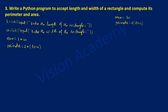Now we are going to print the values stored in area and perimeter using print statements. I am going to write: print area of the rectangle. Then put a comma and write the variable area, and close the bracket.